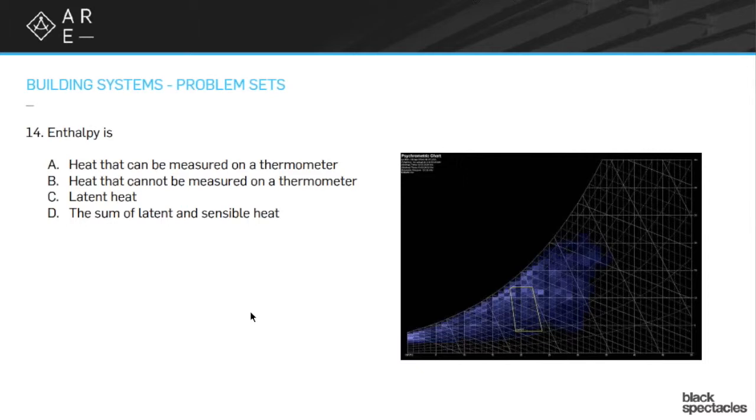So the concept of enthalpy is that it's the total heat. So this means if I need to move the temperature of the office space from 82 down to 75, but I also need to move the moisture level in that office space from, say, 76% relative humidity to 53% relative humidity, I have to do both of those things.